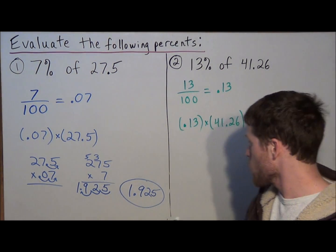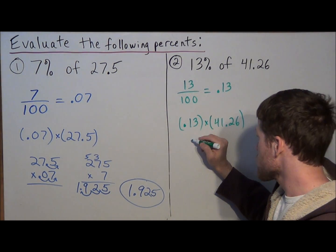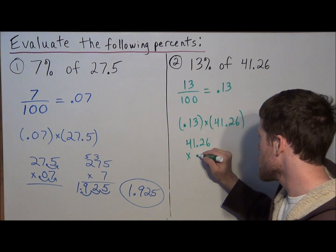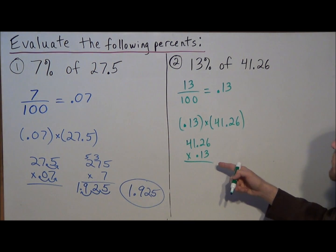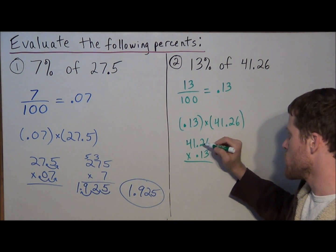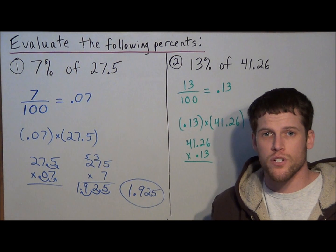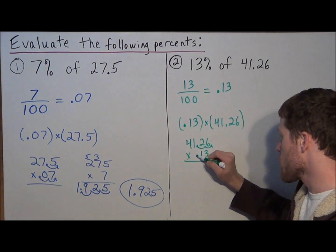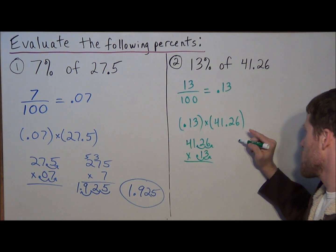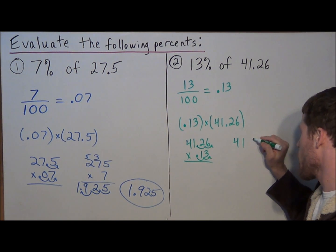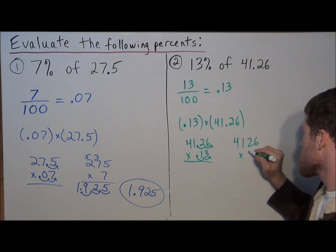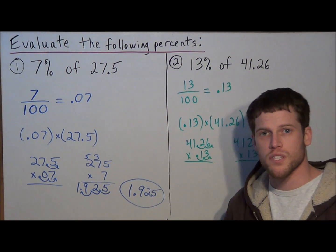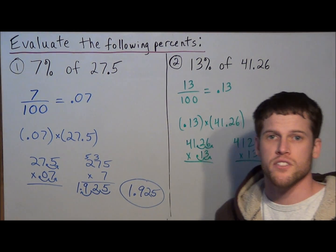So remember, we want to turn this into a long multiplication problem. We're going to write this as 41.26 times .13. But we don't want to multiply decimal terms, we want to multiply whole numbers. So we're going to move this decimal two places to the right, and we're going to move the bottom decimal two places to the right. This will transform the problem into 4,126 times 13. But remember, we went a total of four decimal spaces to the right, so when we're done, we have to go four decimal spaces back to the left.